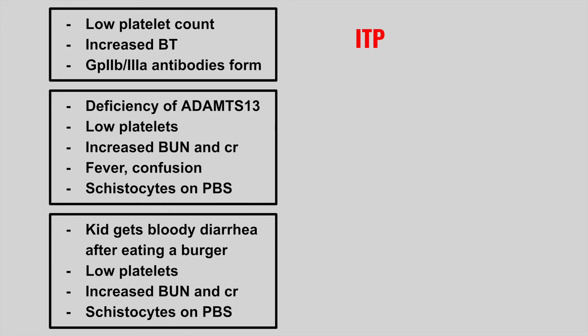Next, we're going to have a patient with a deficiency of ADAMTS13, low platelets, increased BUN and creatinine, and schistocytes. This is TTP.